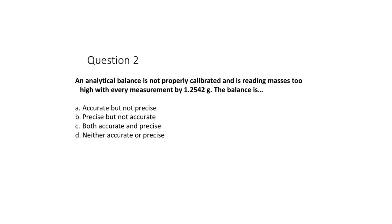Number two: an analytical balance is not properly calibrated, so its masses are always being read a little too high — every measurement is too high by 1.2542 grams. The balance is always high by the same amount, so it's going to be very precise still, but just not accurate. It's going to be off its target.